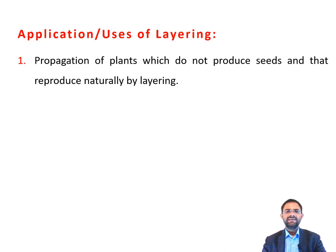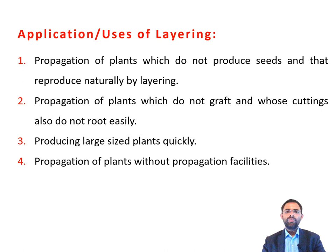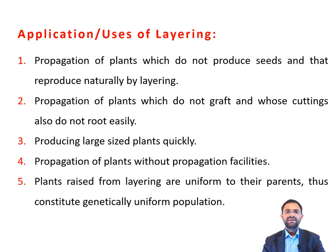Finally, the applications and uses of layering. The first use is propagation of plants which do not produce seeds and that propagate naturally by layering. The next is propagation of plants which do not graft and whose cuttings do not root easily. The next is producing large size plants quickly. The next is propagation of plants without propagation facilities. Plants raised from layering are uniform to their parents, thus constituting a genetically uniform population. Finally, layering is a very important technique of vegetative propagation by which we can fix heterosis in plants.